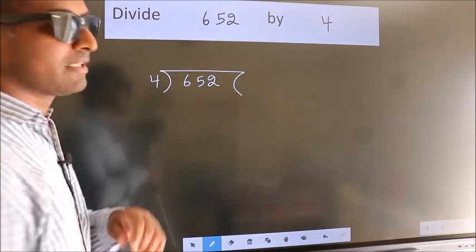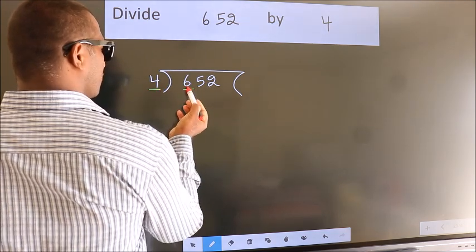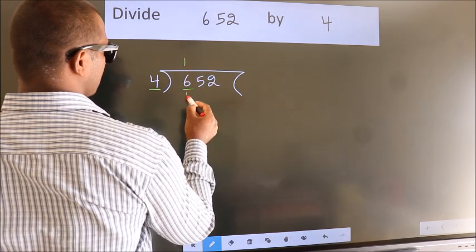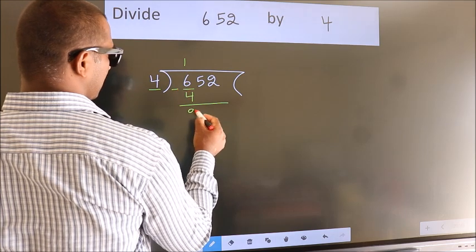Next. Here we have 6, here 4. A number close to 6 in 4 table is 4 once 4. Now we should subtract. We get 2.